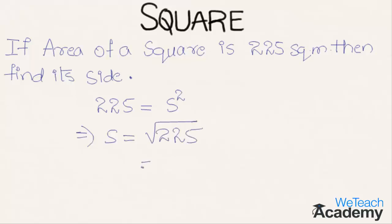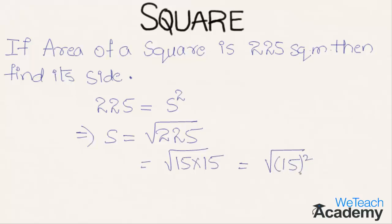We can write √225 as √(15 × 15) = √(15²). The square and square root cancel, giving us the result s = 15 meters.